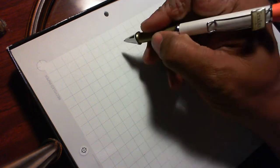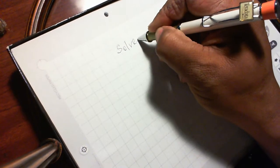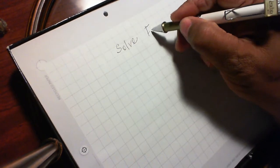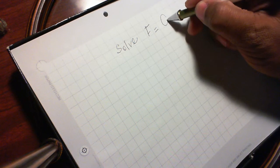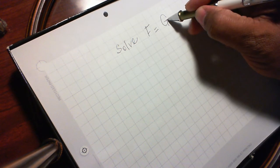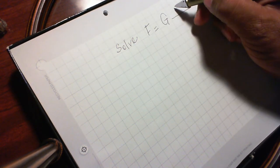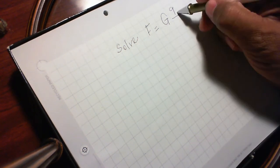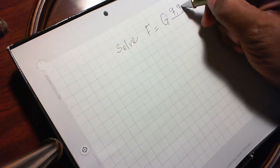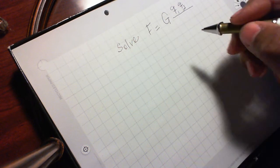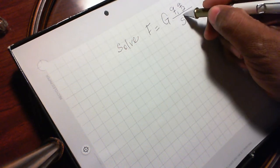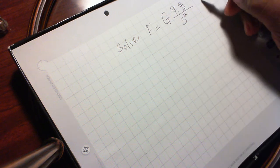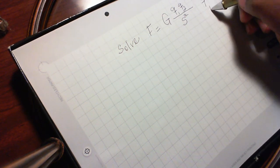I have to solve F is equal to G times q1, q2, divided by s squared. We need to solve for q sub 1.